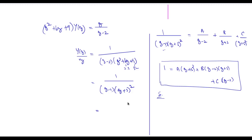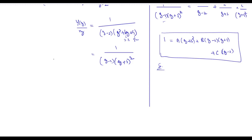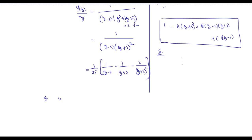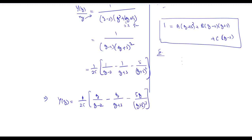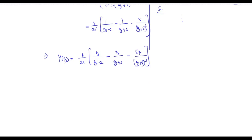The partial fraction result is: 1/25 · [1/(z−2) − 1/(z+3) − 5/(z+3)²]. Therefore Y(z) = (1/25) · [z/(z−2) − z/(z+3) − 5z/(z+3)²].